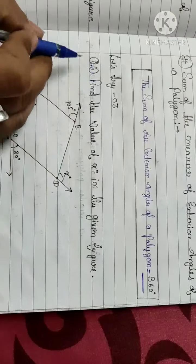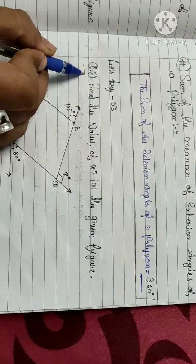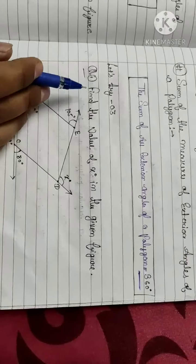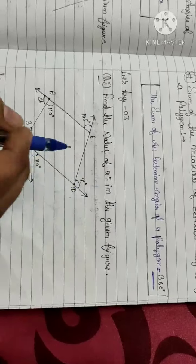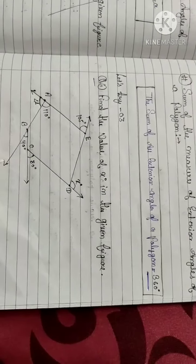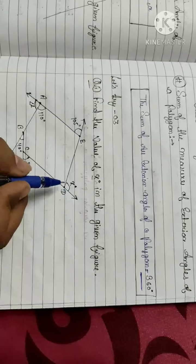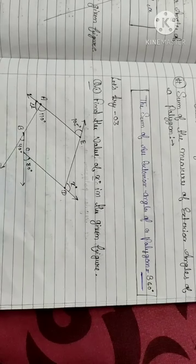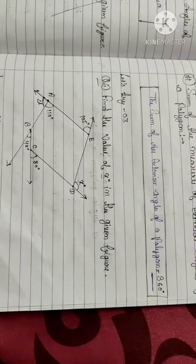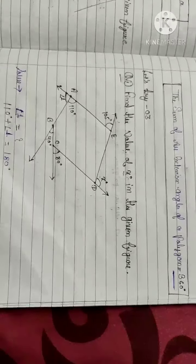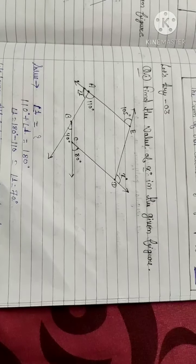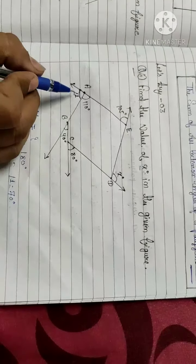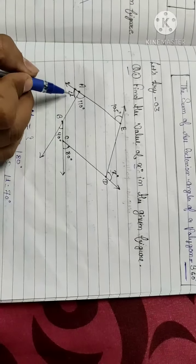Let's try the first question: find the value of x degrees in the given figure. We have a figure with angle x. Here, exterior angle — let's call it angle 1 — is what we need to find.